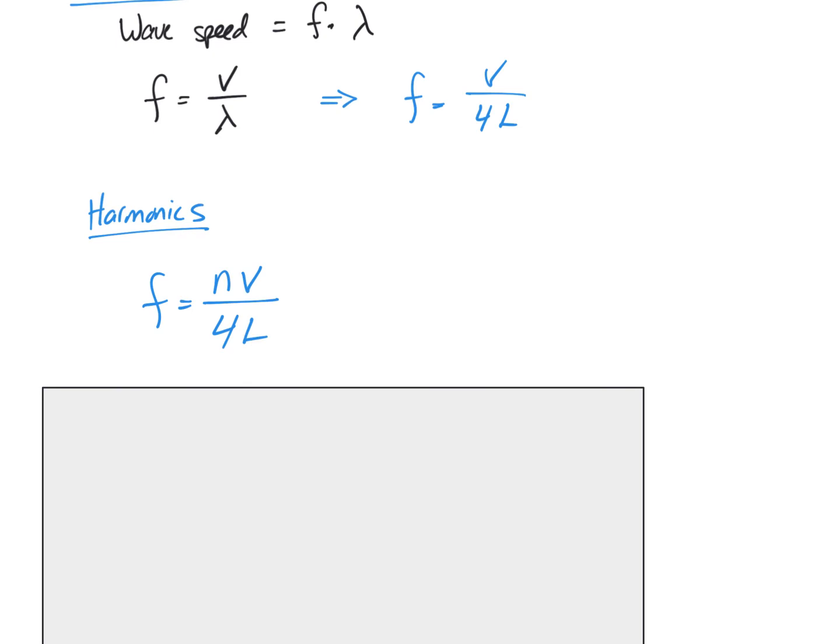So this is one way to calculate any of the things that you're going to need for the quest or for the speed of sound lab. Just keep in mind that frequency is equal to velocity divided by 4L when we have a resonating tube. This is for a closed tube calculation.